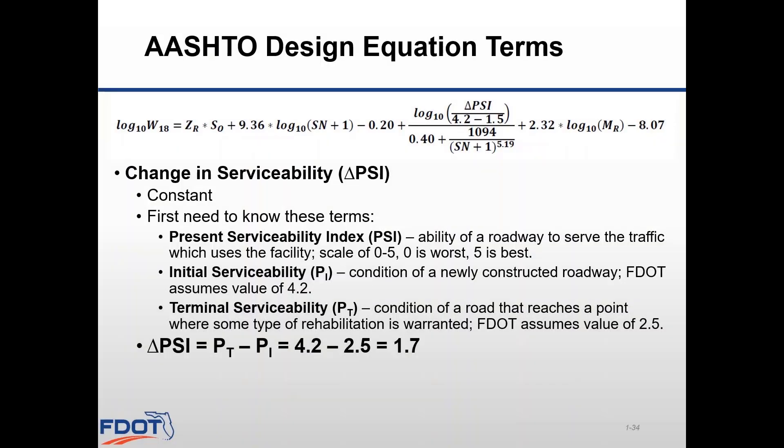The final variable to cover is the change in serviceability. The present serviceability index is a scale from 0 to 5, with 0 being the worst and 5 being the best, measuring the ability of the road to serve the traffic. AASHTO describes this as a measure of roughness and distress, with roughness being the main factor. Initial serviceability is the condition of a newly constructed road, and terminal serviceability is the condition of a road that has reached the end of its design life. AASHTO suggests using a value of 4.2 for initial serviceability and 2.5 for terminal serviceability, and the department has chosen to use these values as well, yielding a change in serviceability delta PSI of 1.7.